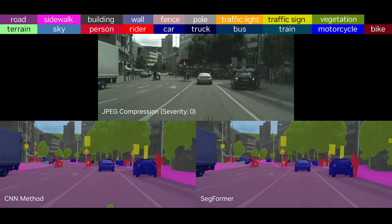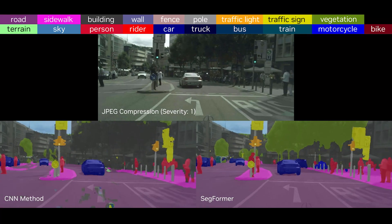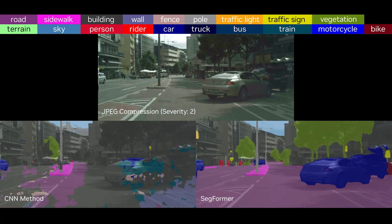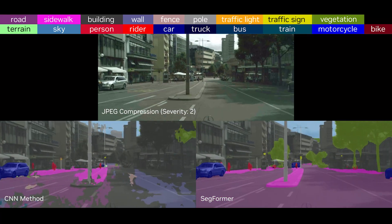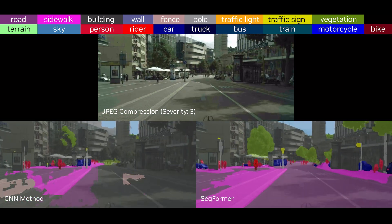During the labeling process, JPEG compression is typically used to reduce file size, allowing easy file transfer and reducing storage expenses. Here, we increase the JPEG compression ratio, and Secformer continues to produce robust results with high accuracy.